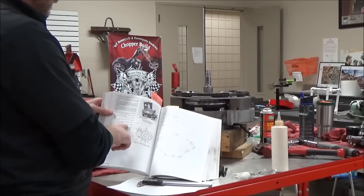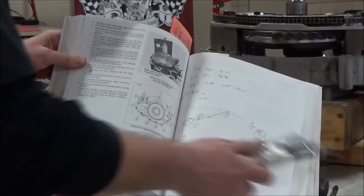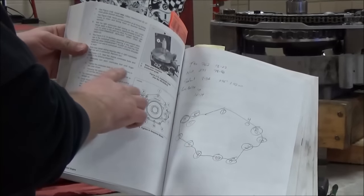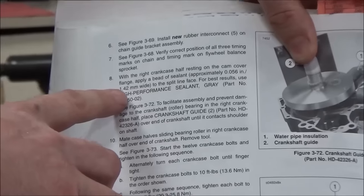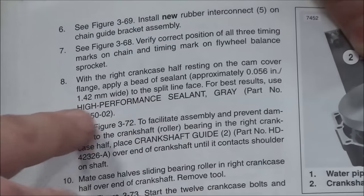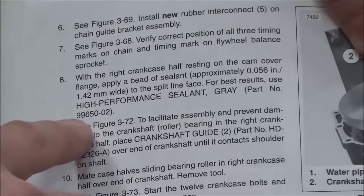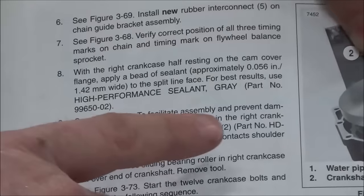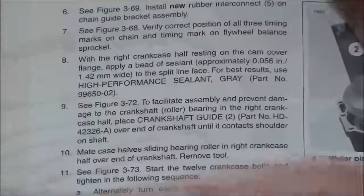Hey guys, we're going to focus in this section of the manual on applying sealants to a set of crankcase. I wanted to show something here. A lot of people don't read the service manual like a checklist. They're pretty specific. Look at what they say: with the right crankcase resting on the cam cover flange, apply a bead of sealant approximately 56 thousandths or 1.42 millimeters wide to the split line face. For best results use this sealant.